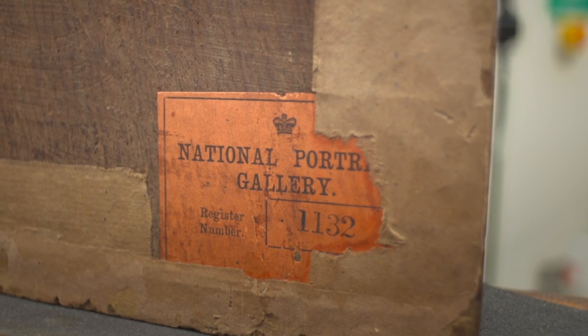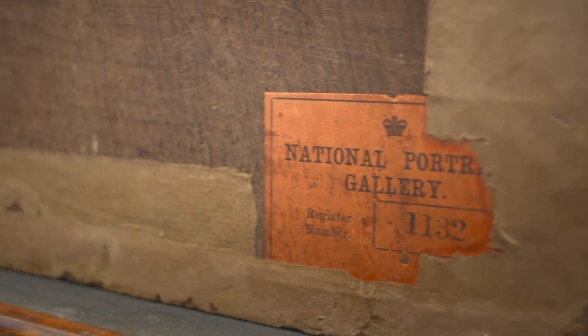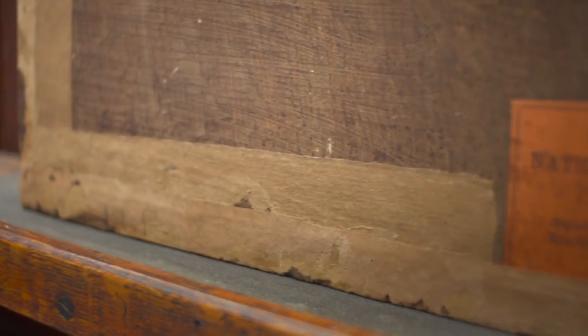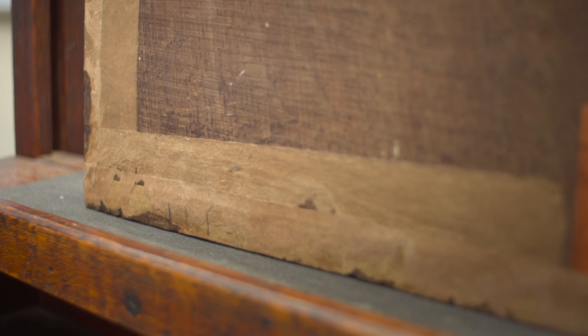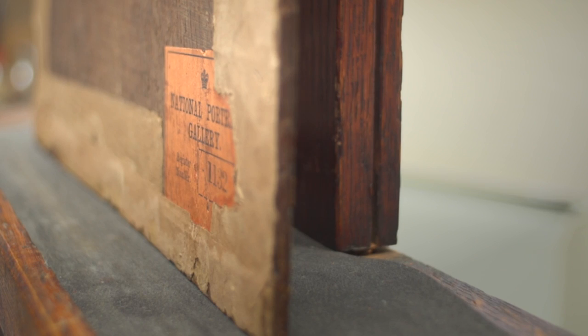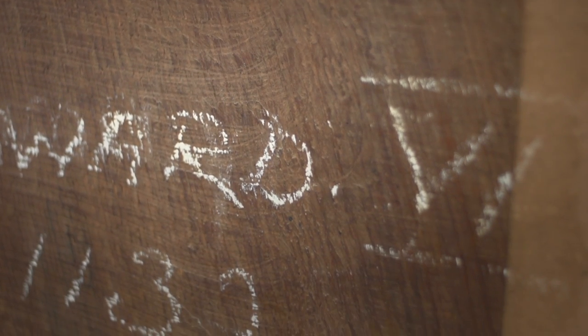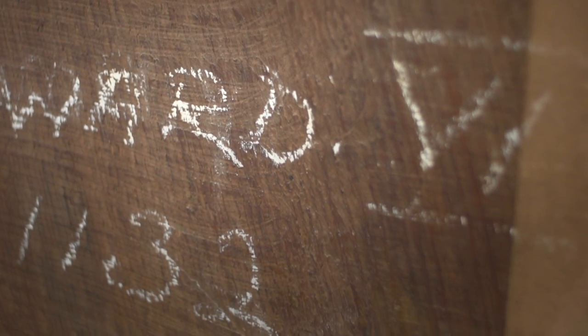The tree ring data for this suggests it is from the London, Surrey, Hampshire kind of area. It's about 10 millimeters thick, which is very normal. The material was used in green form — there was no concept of seasoning in the 16th century.